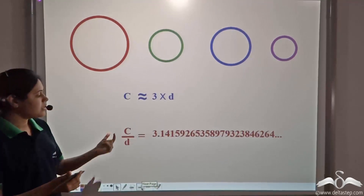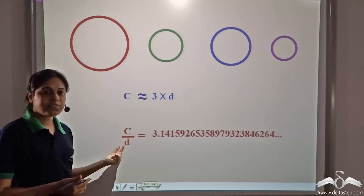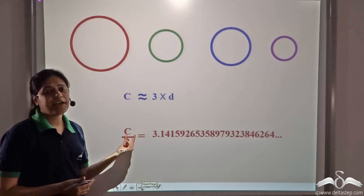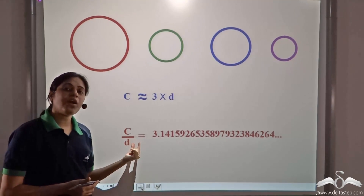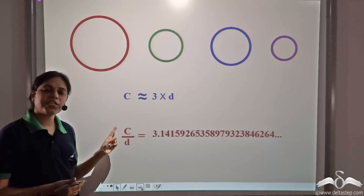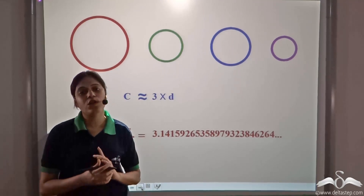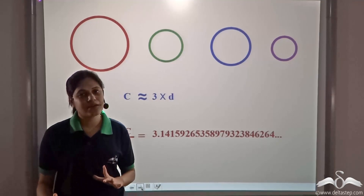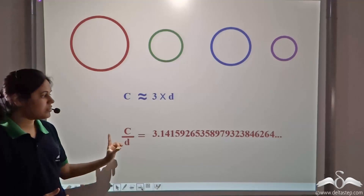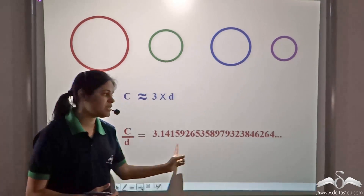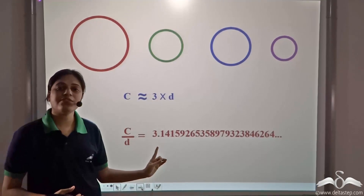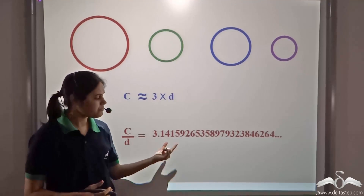He calculated C divided by D — the ratio of circumference to diameter — for different circles and found that no matter how big or small the circle is, this ratio is the same for all circles. So for any circle in the world, the ratio of circumference to diameter turns out to be this same number, which is a very interesting fact.